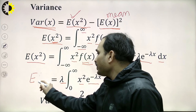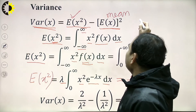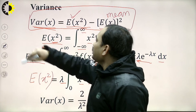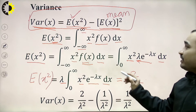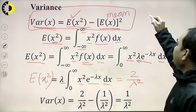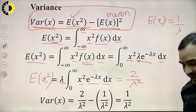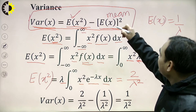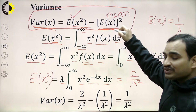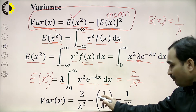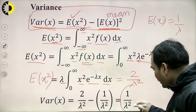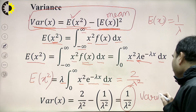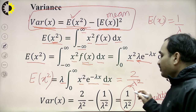Substituting E[X²] = 2/λ² into the variance expression: Var(X) = 2/λ² − (1/λ)² = 2/λ² − 1/λ² = 1/λ². So the variance of the random variable x following the exponential distribution is 1/λ².